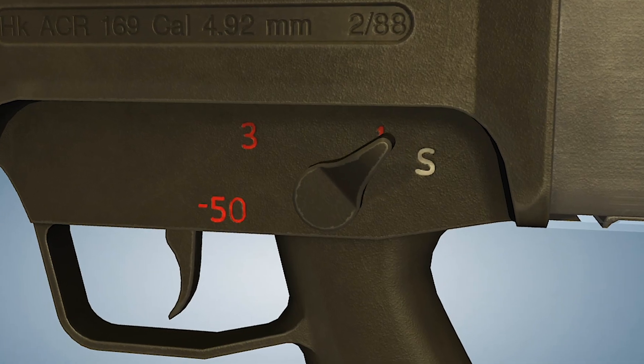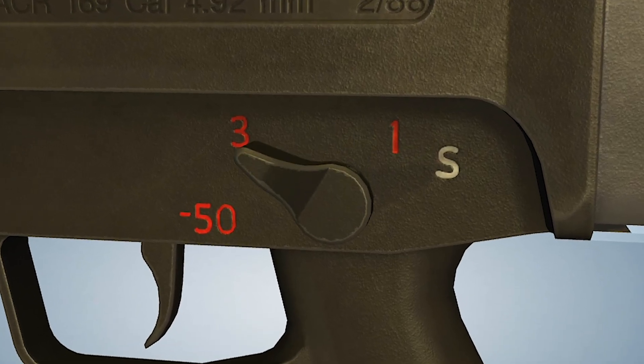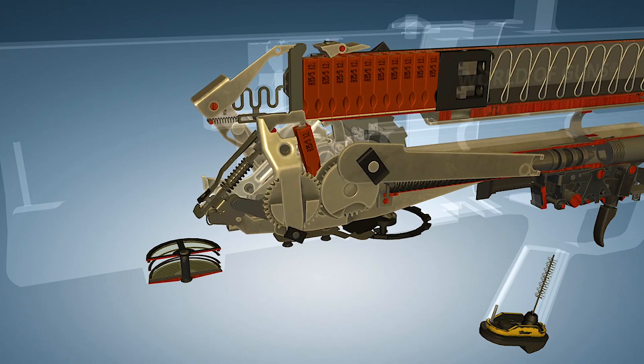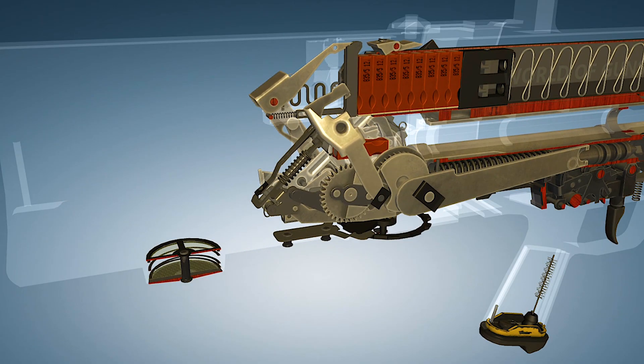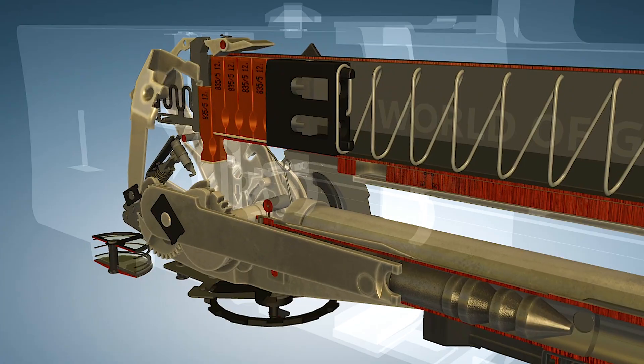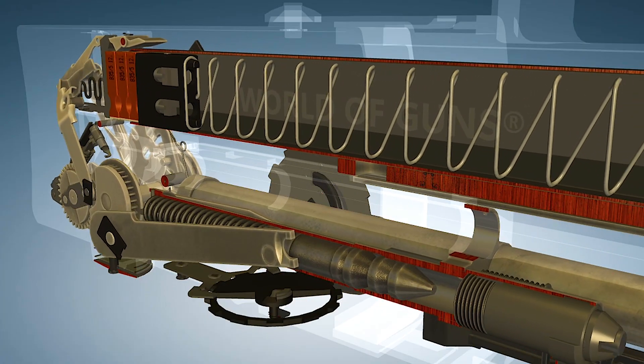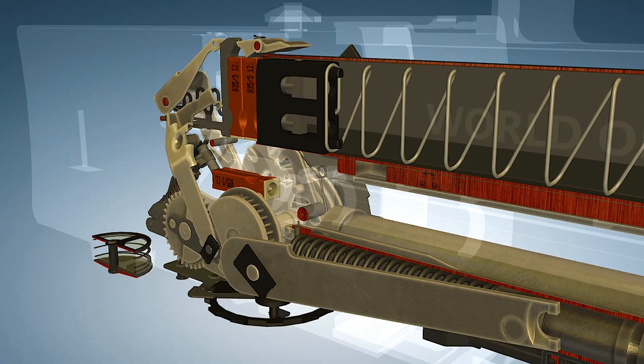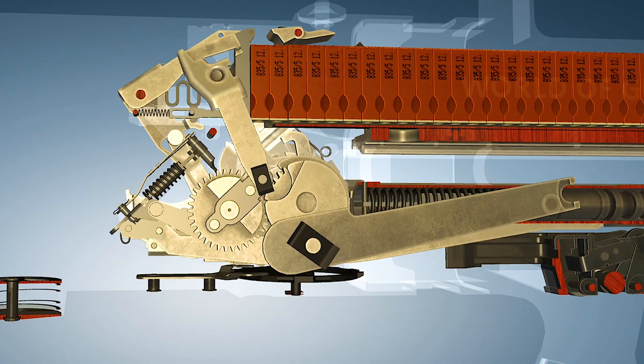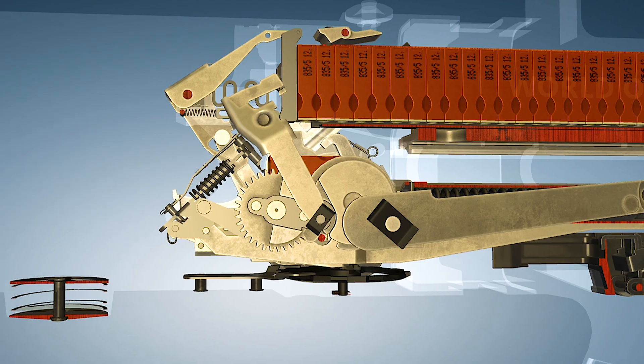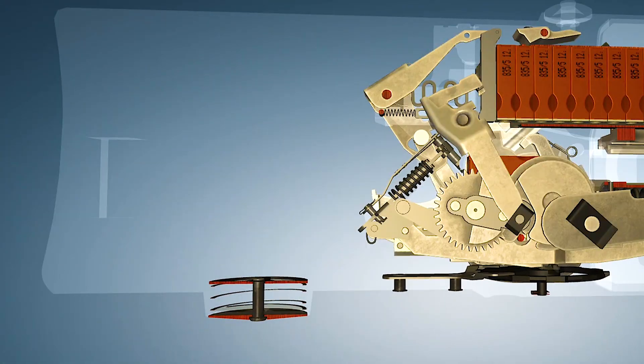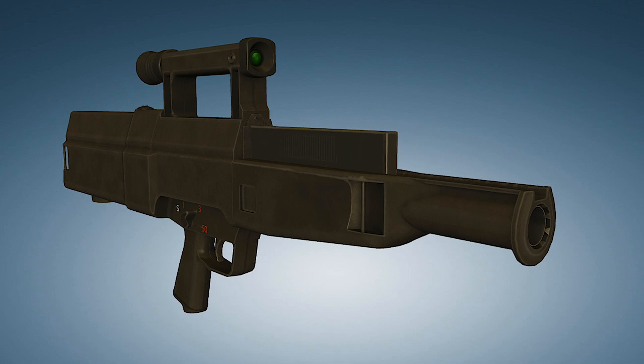But the innovation doesn't stop there. The G-11 boasts a unique firing mechanism that lets it shoot a three-round salvo burst at an incredible rate, up to 20,100 rounds per minute in burst mode. How is that possible? The rifle features a rotating chamber and a recoil delaying system that only kicks in after the third bullet has left the barrel.